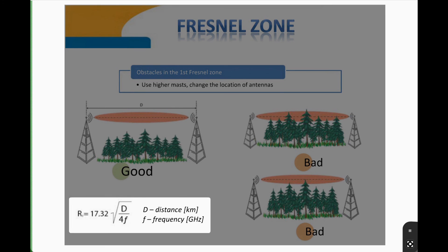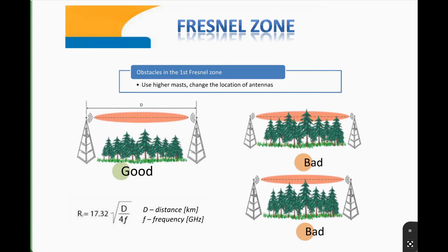The importance of the first Fresnel Zone comes from the fact that almost all energy of the signal is conveyed via this space. In practice, having no obstacles in the central 60% of the first Fresnel Zone ensures that the power loss can be neglected.